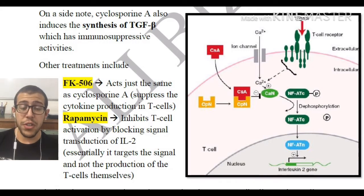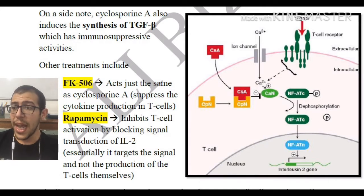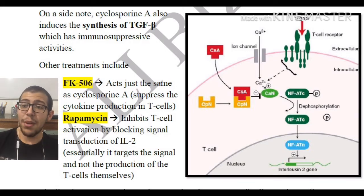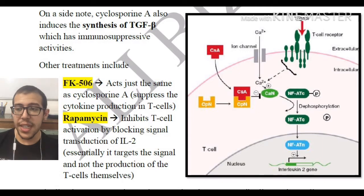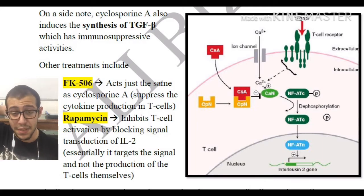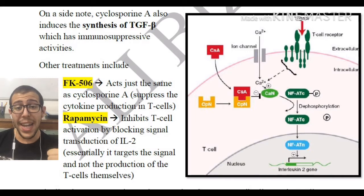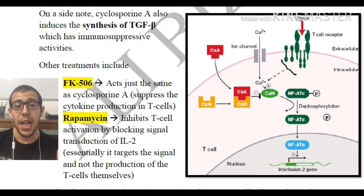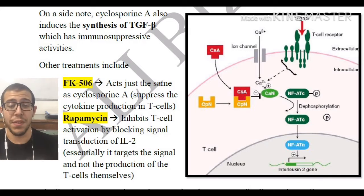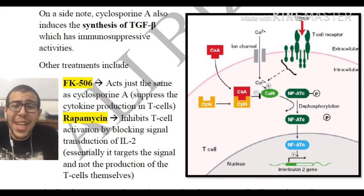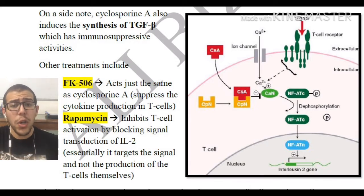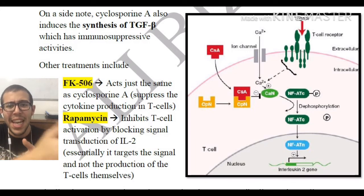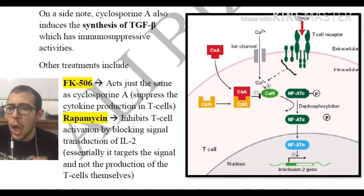Other treatments besides cyclosporine A include FK506, which has the same effect as cyclosporine A — suppressing cytokine production in T cells. Rapamycin inhibits T cell activation by blocking the signal transduction of interleukin-2, targeting the signal rather than the production of T cells themselves. So while cyclosporine A prevents interleukin-2 from being produced in the first place, rapamycin blocks the downstream signaling cascade even after interleukin-2 is expressed.